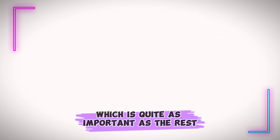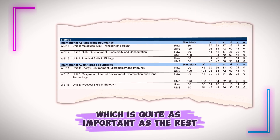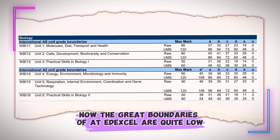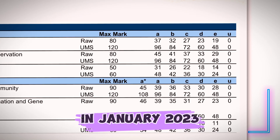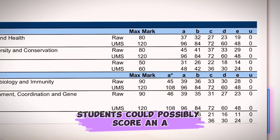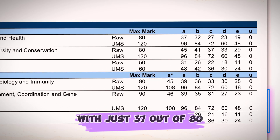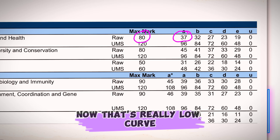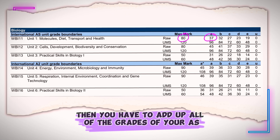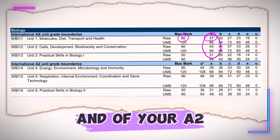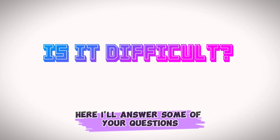The last advantage is the grade curve. The grade boundaries of EdExcel are quite low. Looking at the January 2023 exam session, students could score an A with just 37 out of 80. Note that the highest grade in AS is an A — to score an A-star, you need to add up all grades from both your AS and A2.